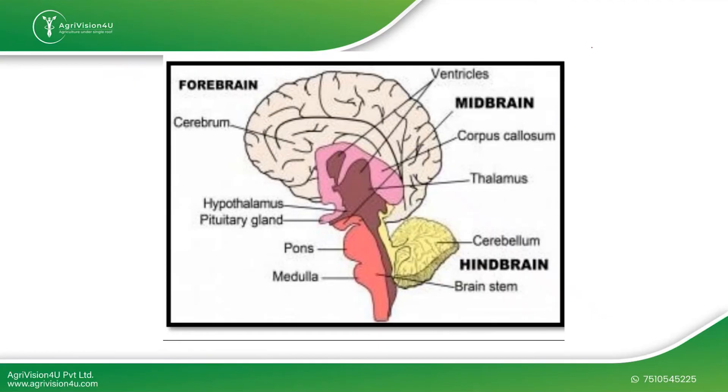There are three major parts of the brain: forebrain, midbrain, and hindbrain. The brain is divided into hemispheres, and each hemisphere has four sections or lobes: frontal lobe, parietal lobe, occipital lobe, and temporal lobe. All these things we have discussed in detail.